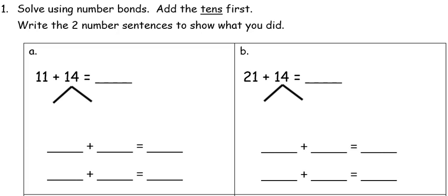So our first problem is 11 plus 14. We're going to break the 14 down into 10 and 4. And just as the directions say, I'm going to add my tens first. So to the number 11 I'm going to add 10 which gives me a total of 21.